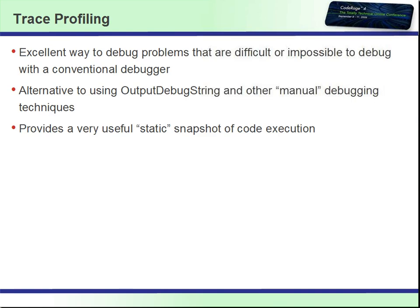The first demo is the Trace Profiler demo. The Trace Profiler is really useful for situations that don't lend themselves well to traditional debugging. A good example is when you have to do something that involves using the mouse — if you have to drag something around, it's difficult to break into the debugger and not lose the context of the drag operation. In those situations, rather than resorting to output debug string or setting up breakpoints that just log messages, it's very useful to get a picture of what's happening under the Trace Profiler.